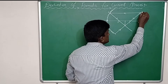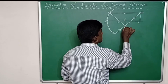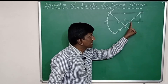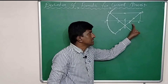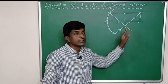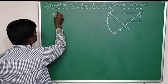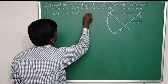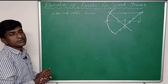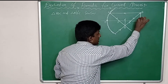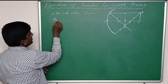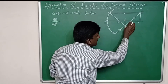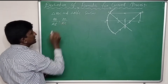Let the object be AB and the image be A'B'. From this diagram we can conclude that triangles ABC and A'B'C are similar triangles. In the case of similar triangles, we can write: AB / A'B' = AC / A'C.